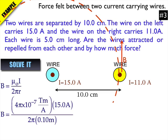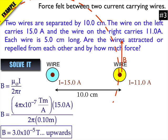So 4π × 10⁻⁷ tesla meters per amp times 15 amps divided by 2π times 0.1 meters. And that's the B field strength in the yellow wire. So that gives me 3 × 10⁻⁵ teslas, or 30 microteslas. And it's going upwards from what we figured out earlier.